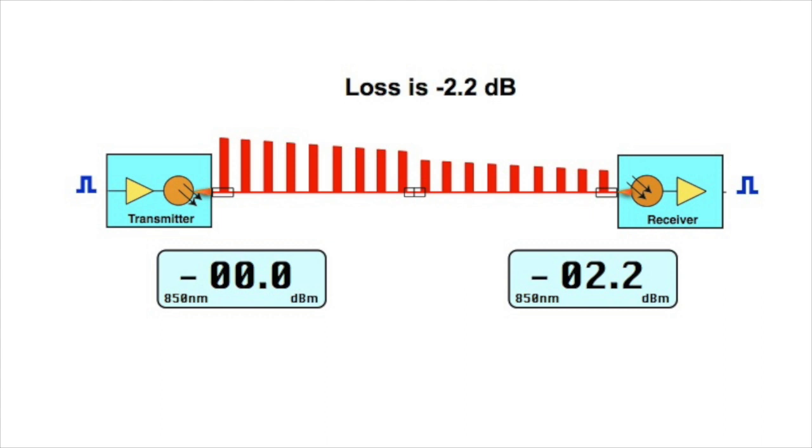Now technically that's a negative number. It went from 0 to minus 2.2 dBm. But we always say loss has just a number like 2.2 dB. And while it might be confusing as a negative number, saying loss makes it easy to understand.